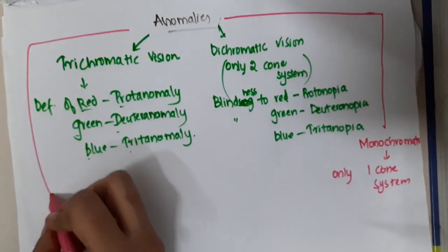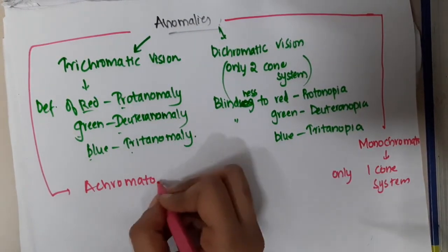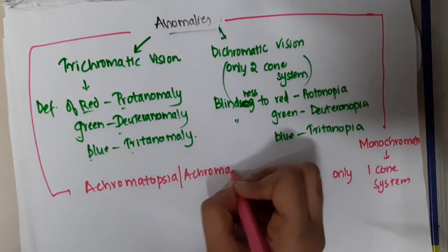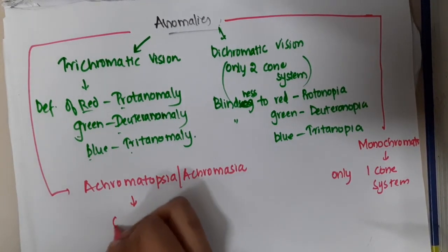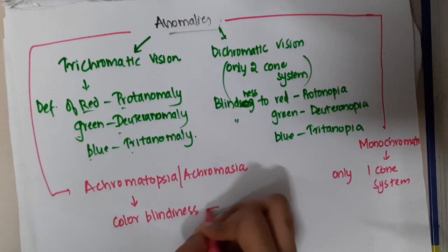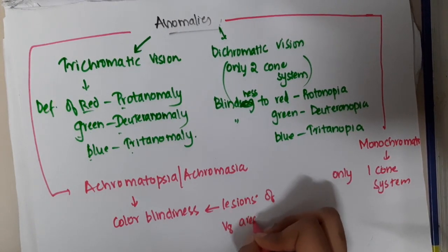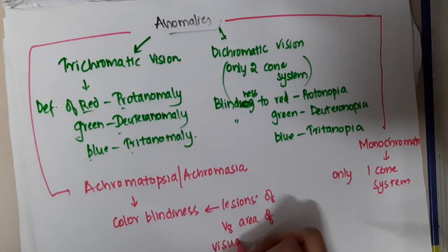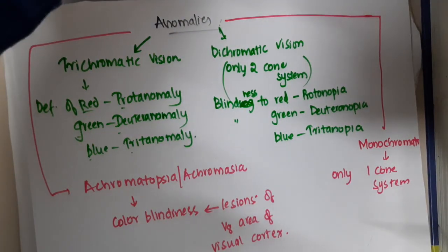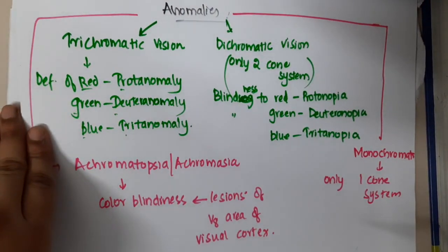We also have a condition called achromatia, where there is color blindness. Color blindness here is present due to lesions of the V8 area of the visual cortex. So these are the different anomalies of the eye related to lesions of the visual cortex.